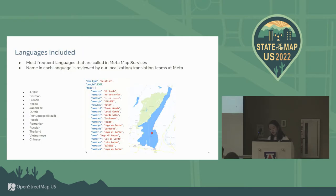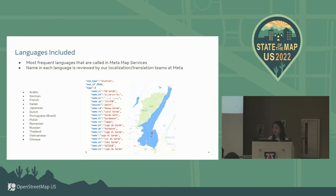For language, for each feature included in this library, we not only have the default name and the English name — we also have non-English names. We select the most frequently used languages in Meta's map service to include in the library. And we work with our localization team closely to verify and review the name in each language to ensure the translation is correct and proper.